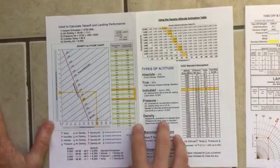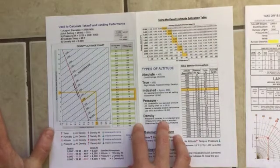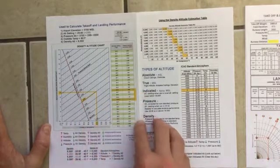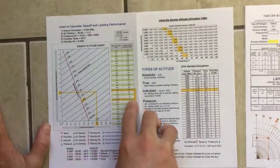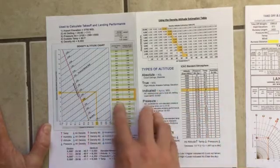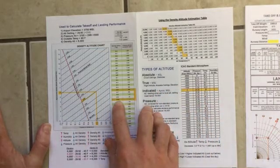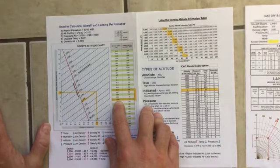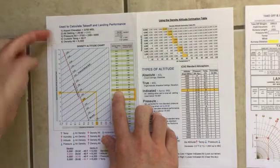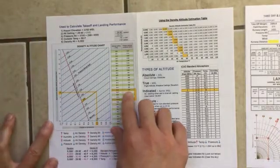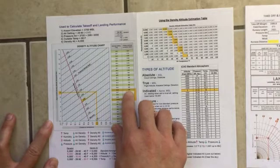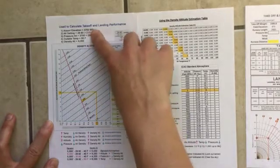This is a standard density altitude chart that I pulled out of the ground training book. I wanted to highlight how you use the chart. I'm going to start off with 29.92 which is standard pressure. You're going to go up to 29.6 as in this example and it's going to give you 298 feet.